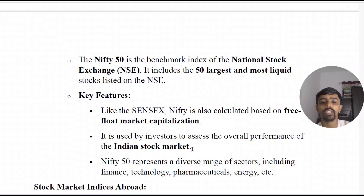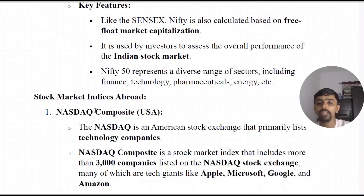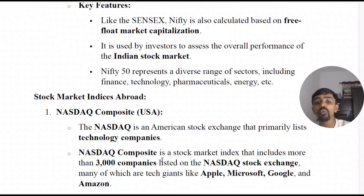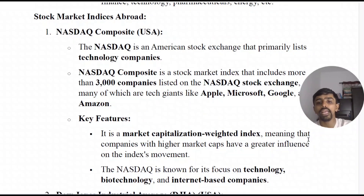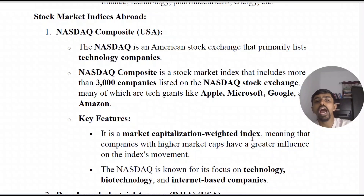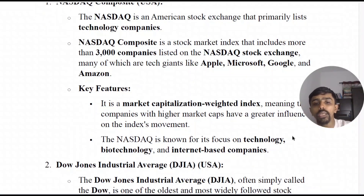Nifty 50 represents a diverse range of sectors including financial technology, pharmaceuticals, and energy. Moving to international indices, NASDAQ Composite is an American stock exchange that primarily lists technology companies. It is a composite stock market index that includes more than 3,000 companies listed on the NASDAQ stock exchange, many of which are tech giants such as Apple, Microsoft, Google, and Amazon. It is a market capitalization weighted index, meaning companies with higher market cap have greater influence on index movement.